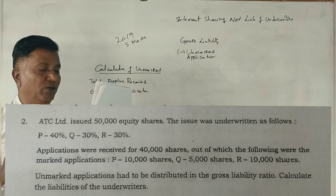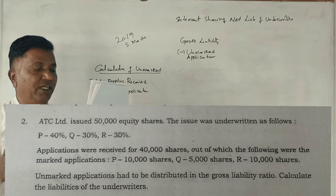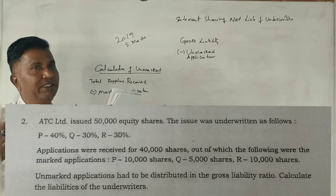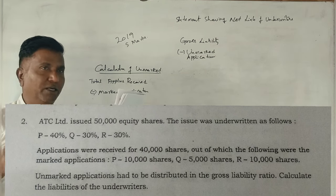The issue was underwritten as follows: P, Q, R. 40%, 30%, 30%. 40 plus 30 is 70, plus 30 is 100 percent.